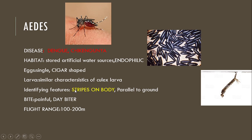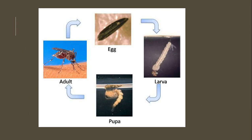Identifying features of the Aedes adult mosquito: it contains stripes on the body and lies parallel to the ground. It has a painful bite and it is a day biter. The flight range is 100 to 200 meters. To sum up Aedes mosquito: eggs are rod-shaped and single, larvae is similar to Culex and is a bottom feeder with a siphon present. The identifying feature of the adult mosquito is stripes on the body and it lies parallel to the ground.